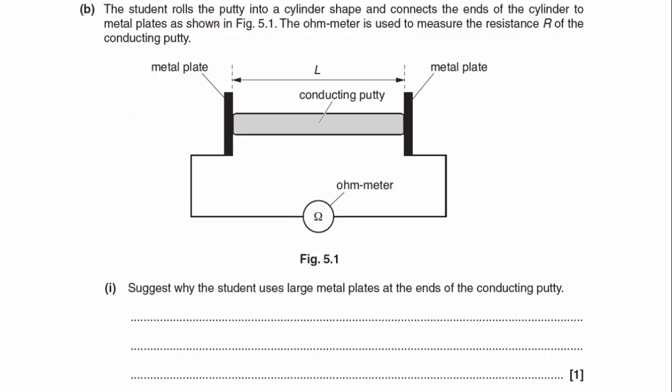So part B, the student rolls the putty into a cylinder shape and connects the ends of the cylinder to metal plates, as shown in figure 5.1. The ohm meter is used to measure the resistance R of the conducting putty.